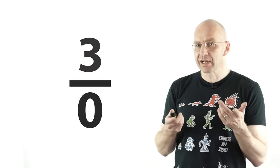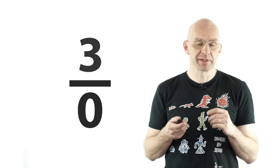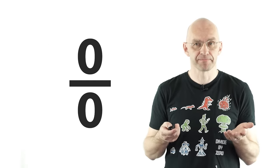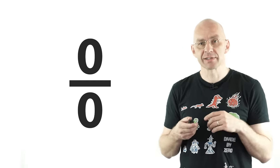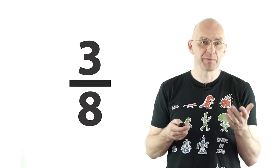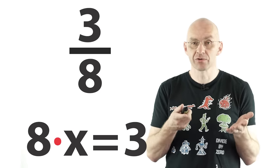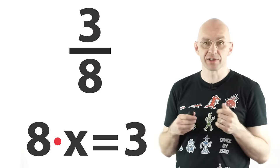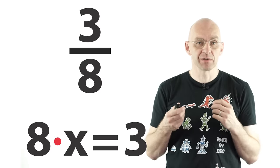Alright so why do they tell you that you can't divide 3 by 0 or that 0 divided by 0 is undefined? Well let's have a look at something that nobody has a problem with, 3 divided by 8. So in math 3 divided by 8 actually just stands for the one and only solution of this simple equation there. 8 times x is equal to 3.